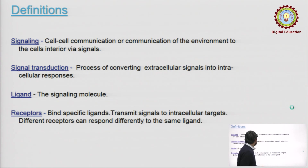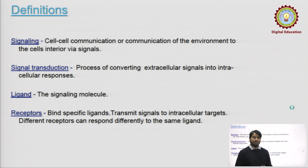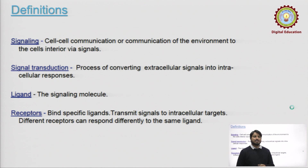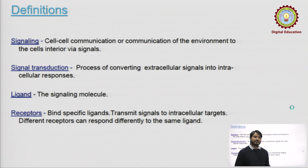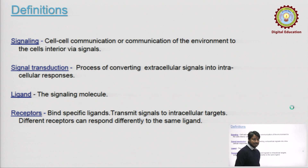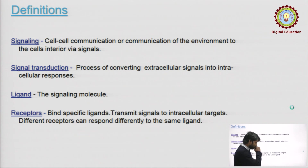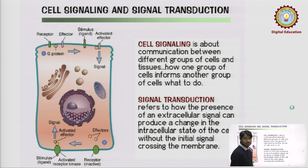The next is ligand. The ligand acts as a signaling molecule for the receptor which is present on the cell membrane. The next is the receptor. The receptor binds to the specific ligand and transmits this signal to intracellular molecules or targets. Different receptors can bind to different ligands, and different receptors can respond differently to the same ligand.